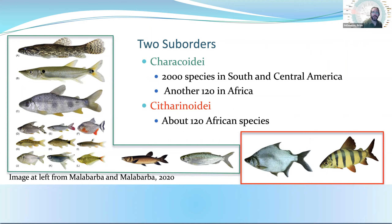Characiformes are divided into two suborders. One of them is Characoidei, which is where the bulk of the diversity is — about 2,000 species in South and Central America, and then another 120 or so in Africa, outlined in green here. We also have a much smaller radiation called Citharinoidei, which is about 120 African species. Traditionally, Characiformes have been divided among these two suborders, with most of the diversity in Characoidei, which spans both of the continental radiations.